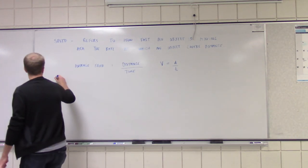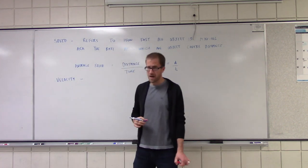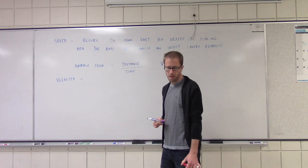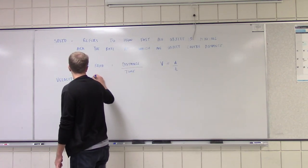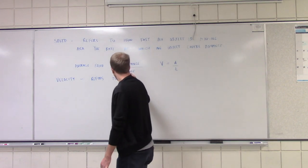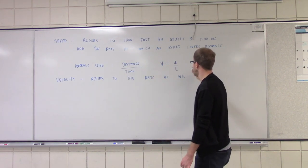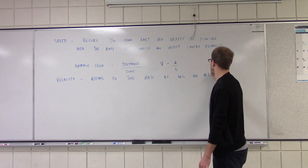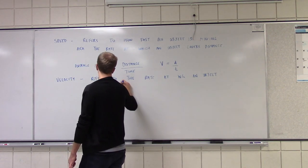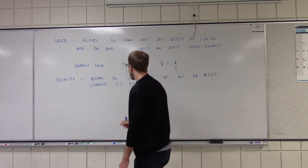Let's talk about velocity now. So velocity — is that a scalar or a vector? It is a vector. And instead of referring to how fast that object is going, it refers to the rate at which an object changes its position.